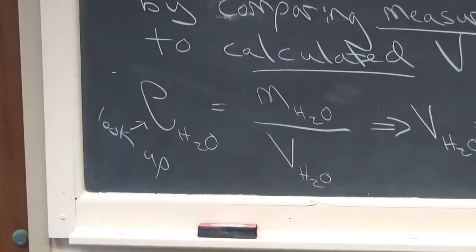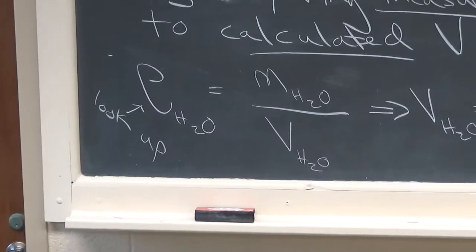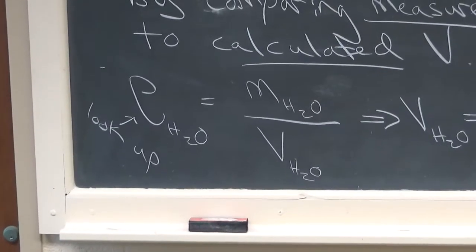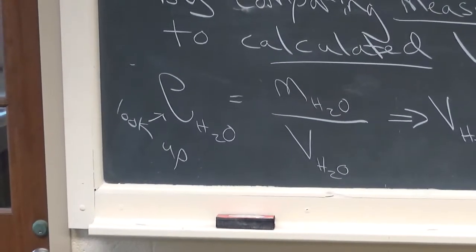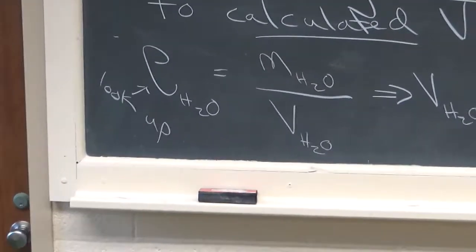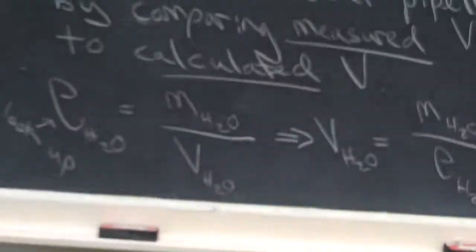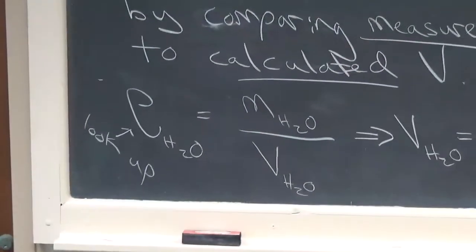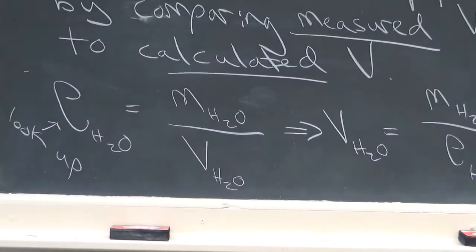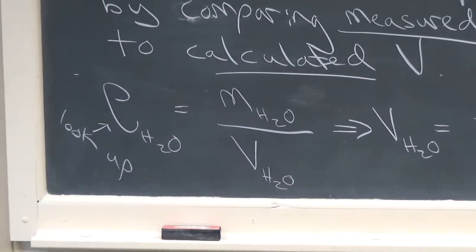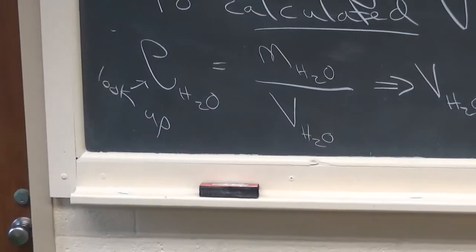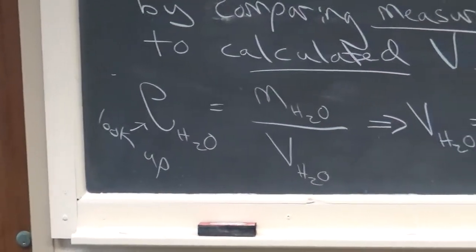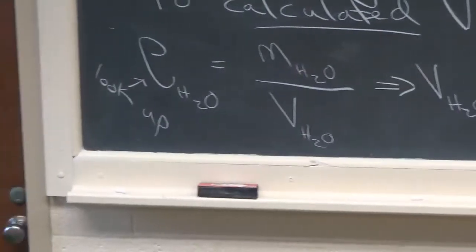We'll look up the density of water to a high degree of precision. It's on here, all these numbers. So we'll have a very precise density and a really precise mass from our electronic balances because you'll weigh a flask empty, then weigh it again and subtract the two. That should be pretty simple by now. Then you'll calculate the volume.